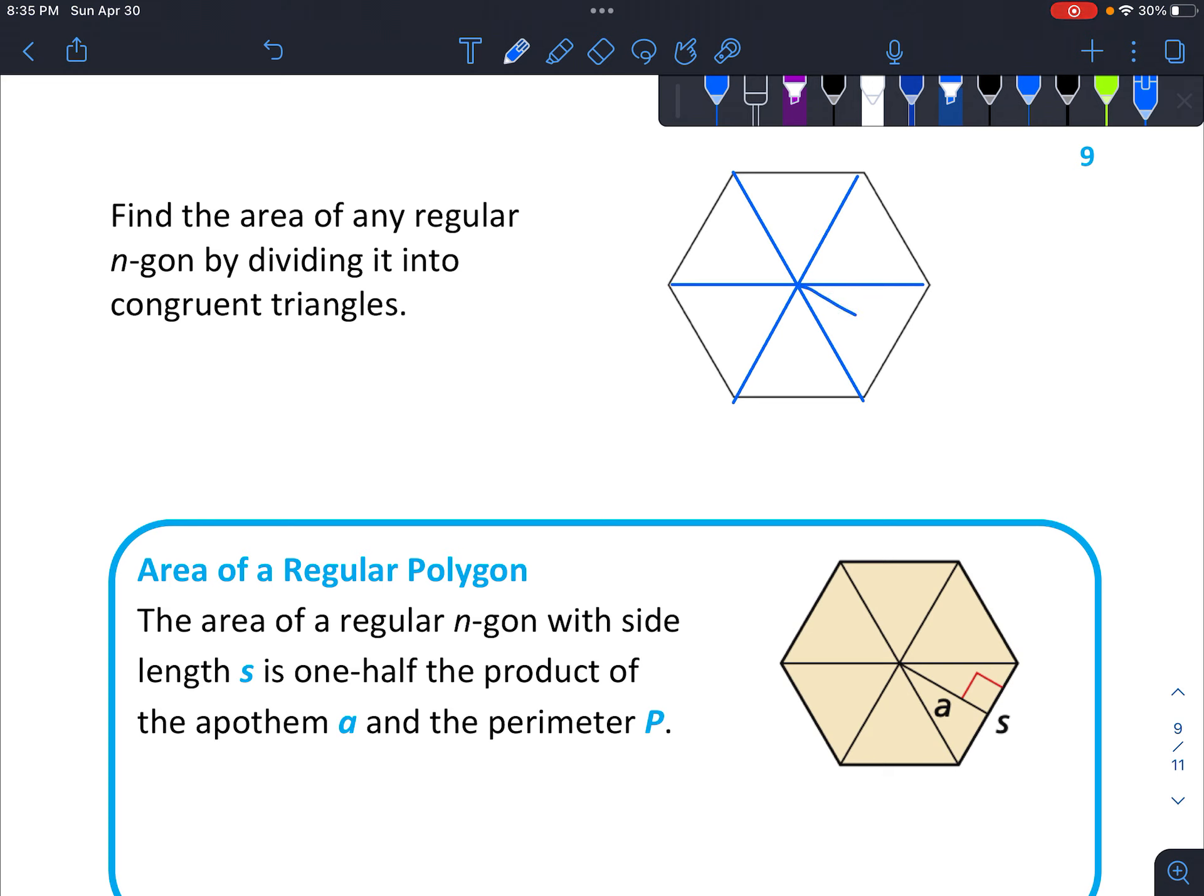And I want you to think about the apothem right here, which has a right angle. And then this here we'll label as the side length. So basically we have the base times the height of the triangle right there. And remember it's one-half times base times height.